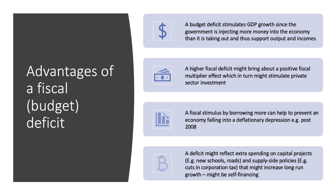The first argument for a fiscal deficit is that it acts as a fiscal stimulus designed to increase GDP growth, because the government is putting more money into the economy. Government spending is an injection compared to tax, which is a leakage — it's a net injection into the circular flow and this supports output and incomes.